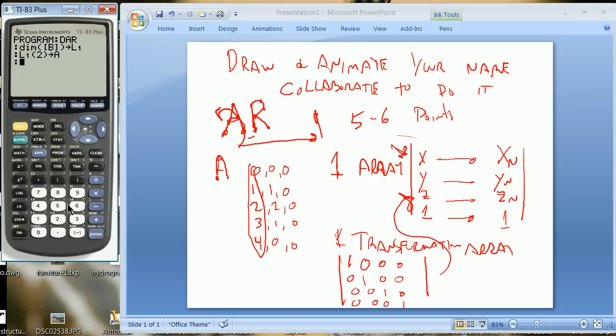So you can go something like this. Second L1 open parenthesis 2 and you can store that into any variable you want. You could call it into A if you wanted. Alpha A. And now A is the length of the number of columns in dimension B. But you actually might want to have one less than that because if you have 11 points you probably have 10 lines. So you only want to draw 10 lines. So you might do something like this. Alpha A minus 1 stored into Alpha A.